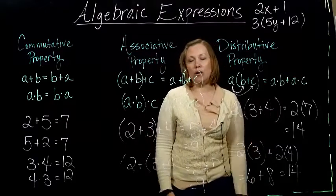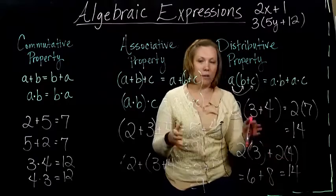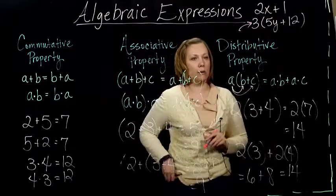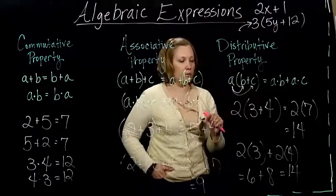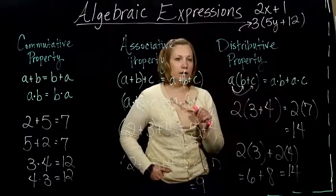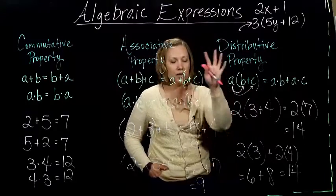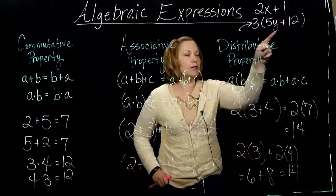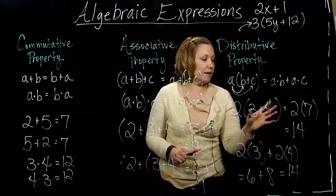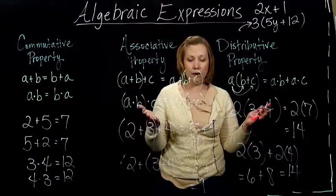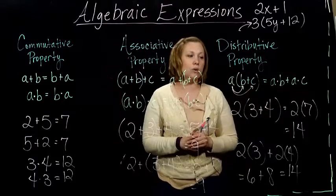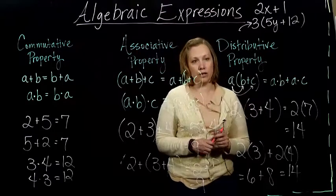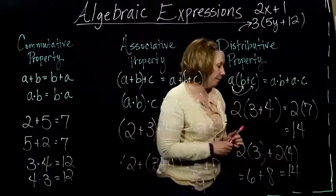So you might be asking yourself, how in the world does this help us? Well, this is going to help us simplify these algebraic expressions. So this second one that I wrote up here, we could use some of these properties on it. We could use the distributive property. And so because all numbers follow these rules, we can always use these to rewrite our algebraic expression with something that's equal to it, but just looks a little nicer and is easier for us to work with. So that's our goal is to use these rules that all numbers follow to be able to rewrite complicated expressions in a way that we can work with them better.